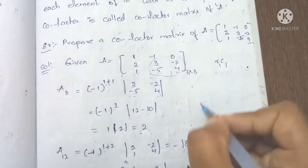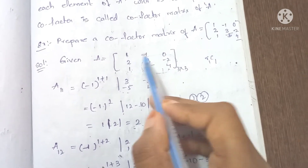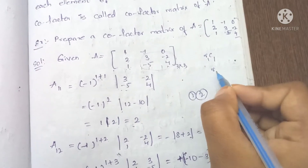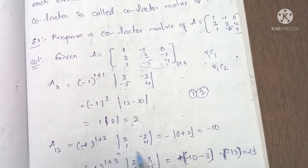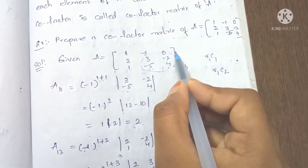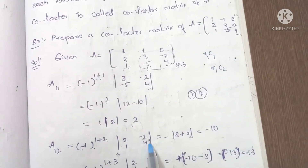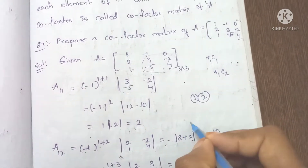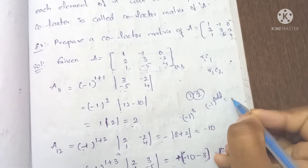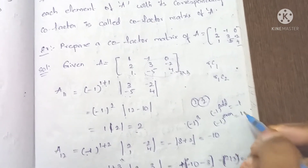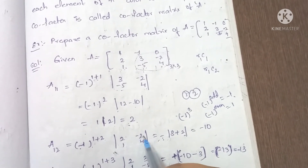Second element is -1 at row 1, column 2. C12 = (-1)^(1+2) times the minor. Eliminating row 1 and column 2, the remaining submatrix is [-1, -5; 0, 4]. Determinant = (-1)×4 minus (-5)×0 = -4 minus 0 = -4. Since (-1)^3 = -1 (odd power), cofactor C12 = (-1)×(-4) = 4. But with the full sign: C12 = minus 1 times minor = (-1)×(-4) = minus 10.